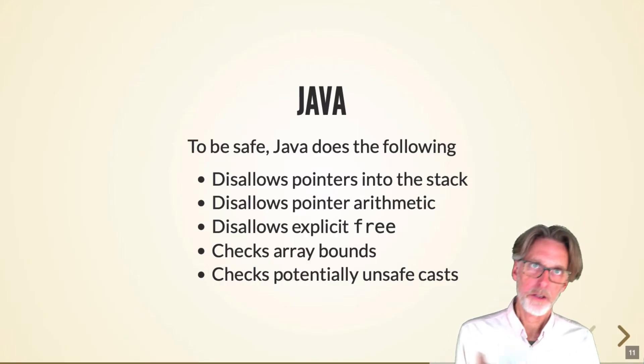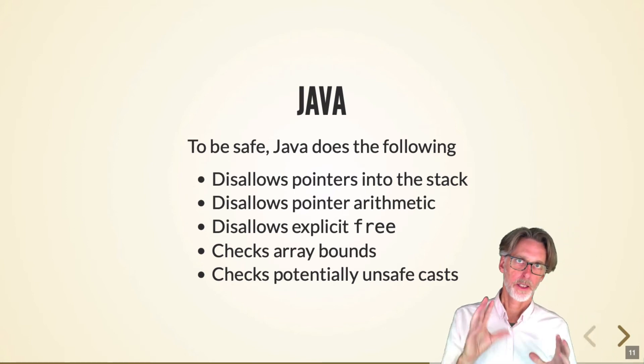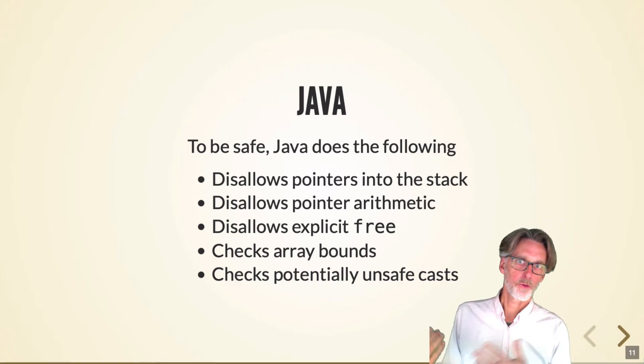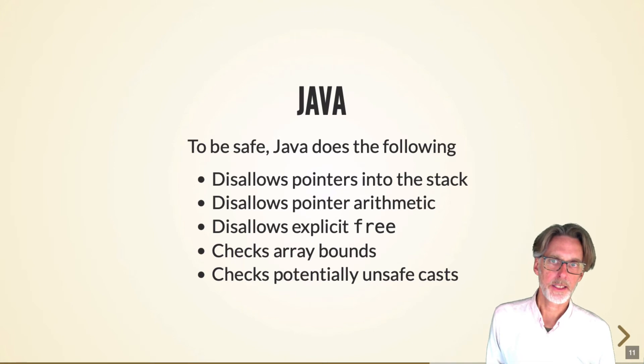Java, and many other languages, but I'll pick Java because it's familiar. Java was designed to be safe. And what does that mean? It means that they had to leave a lot of things out of the language and impose certain restrictions in order to avoid this kind of unsafety that we see in C. In particular, Java disallows pointers into the stack. It disallows pointer arithmetic. It disallows explicit free operations. And it imposes checks on array bounds and checks on potentially unsafe casts.